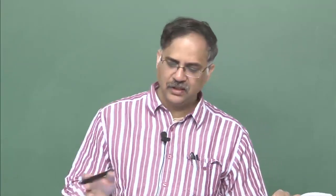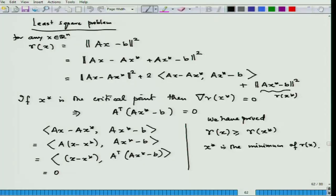We were discussing this least square problem, basically using this technique of optimization to try to find a solution to Ax equal to b. We have shown that any critical point of this function is a minimum to this function, and hence is a solution to the original problem. So any critical point of this problem is a solution to this problem.